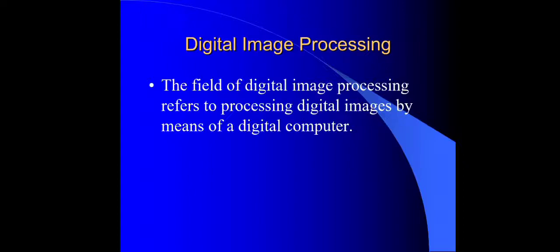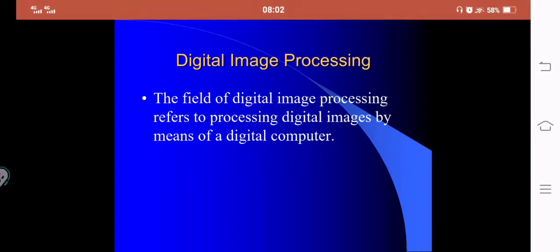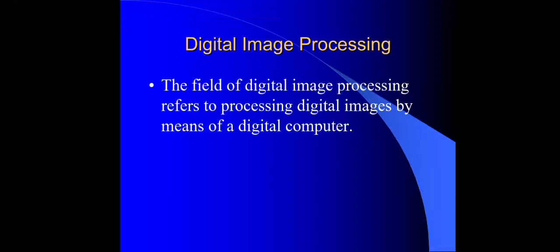First we need to know the subject. The name is digital image processing. Digital image processing is basically manipulation of digital images — how to use digital images using a digital computer system. We use daily devices which are our laptop, PC, mobile phone, and tablets.